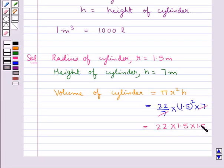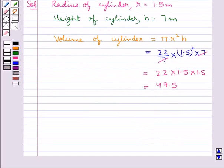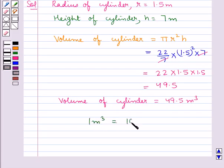7 and 7 gets cancelled and we are left with 22 multiplied by 1.5 multiplied by 1.5 which is equal to 49.5. So we get volume of cylinder is equal to 49.5 meter cube.